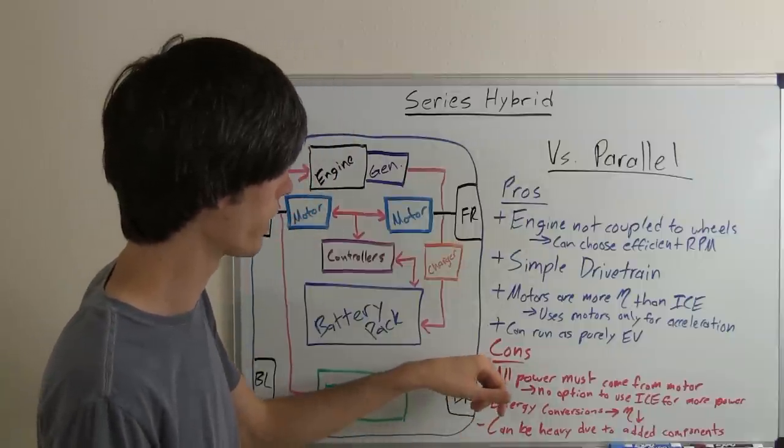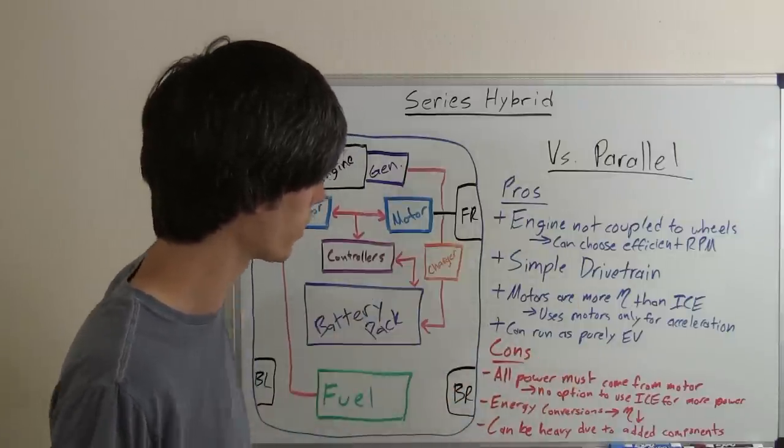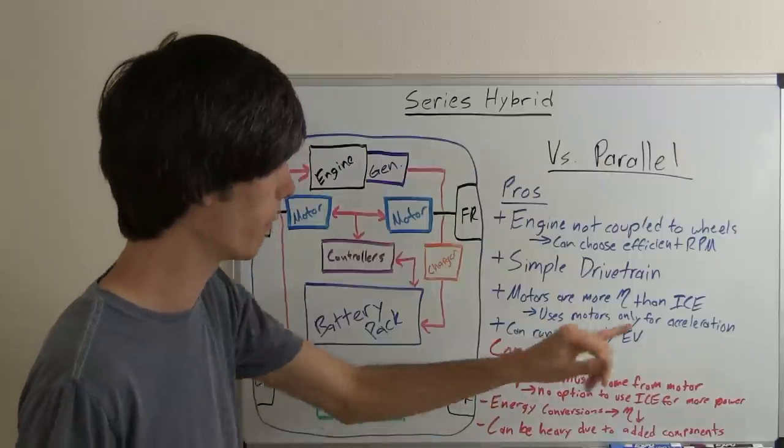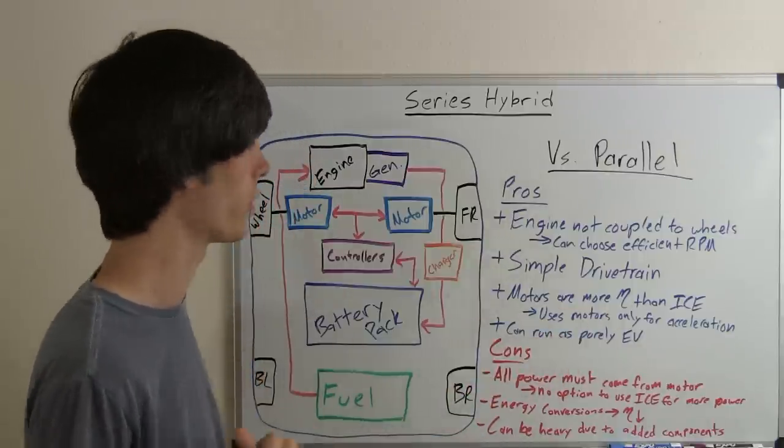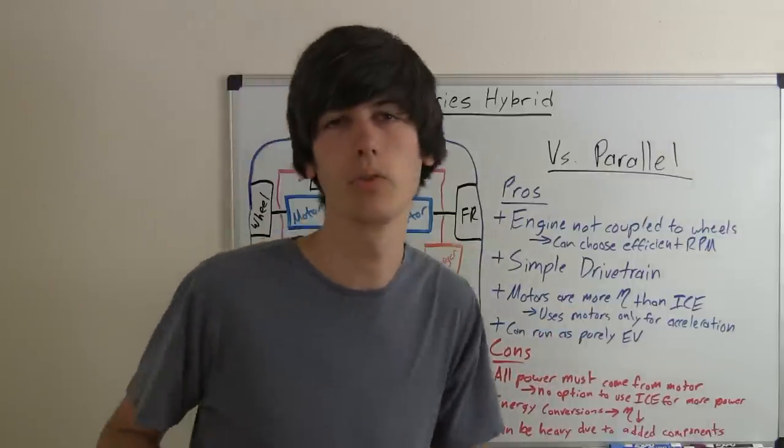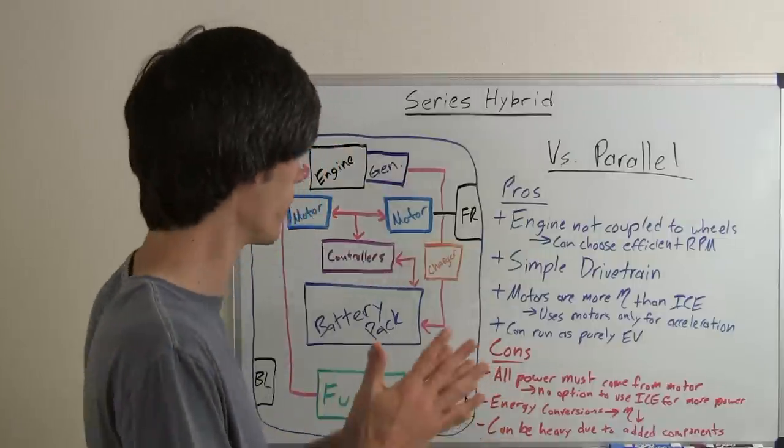So what are some disadvantages against parallel? Well, all the power must come from the motors at the wheels. So you don't have that option of using the internal combustion engine for more power when you need it.